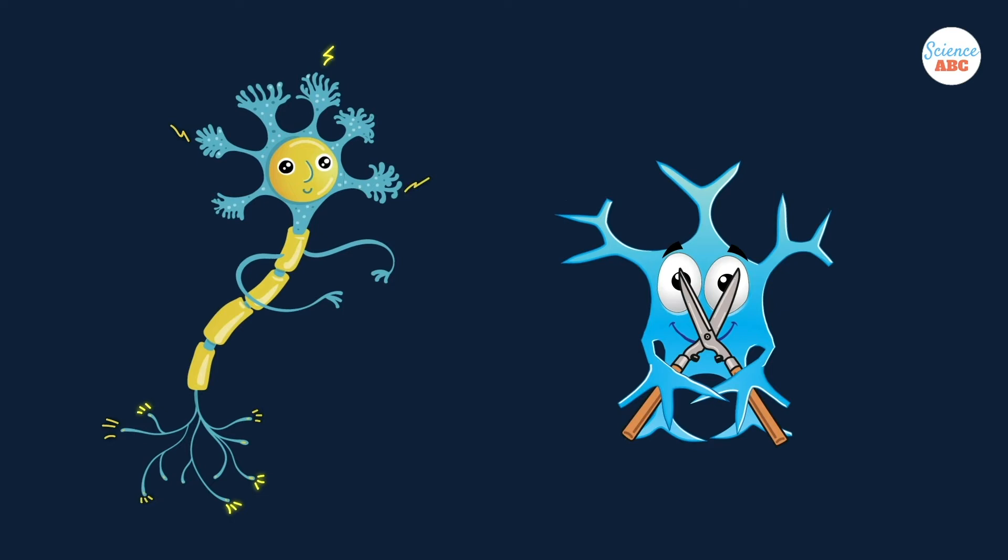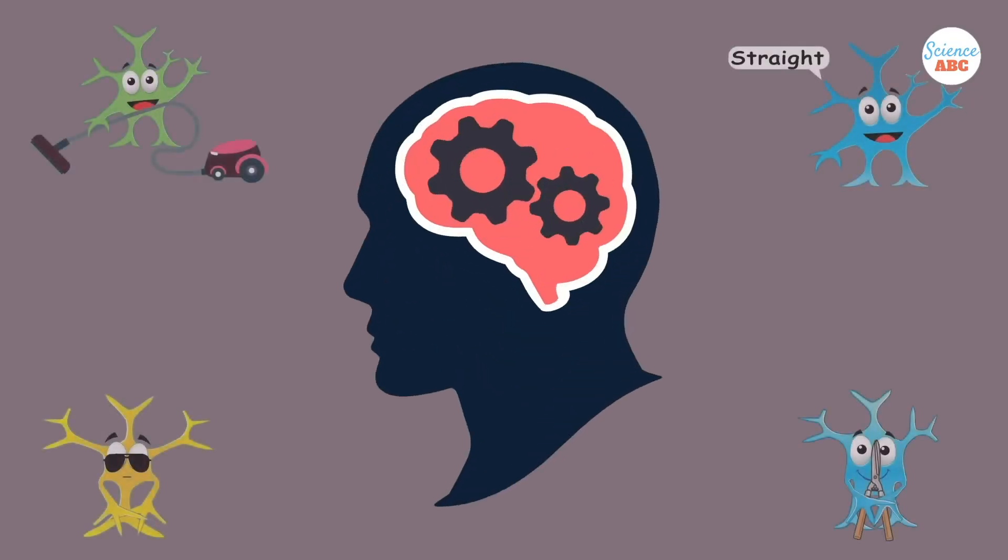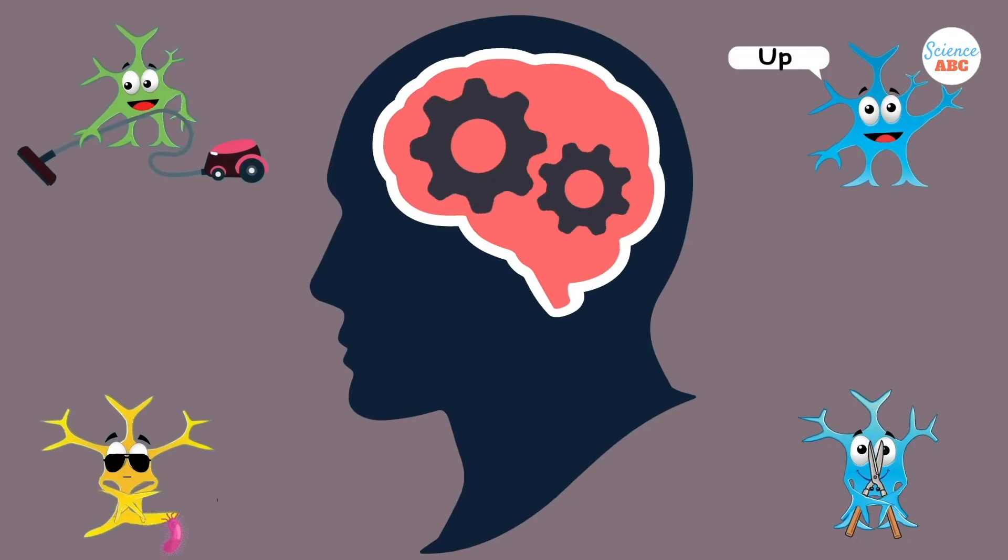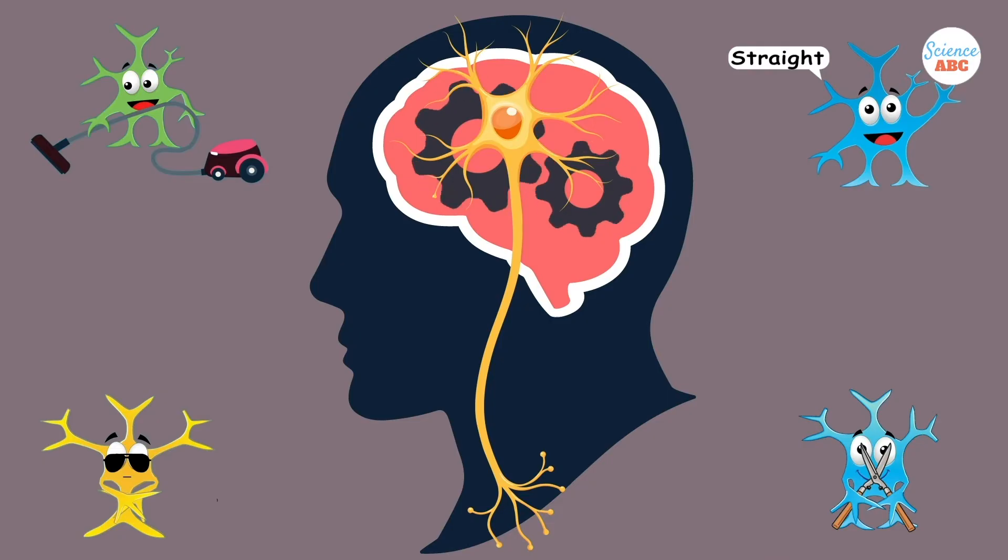Even after connections are formed, glia prune the neurons that are either defective or redundant. These are all basic nervous system maintenance jobs that keep everything in order, but this is a largely neuron-centric view.